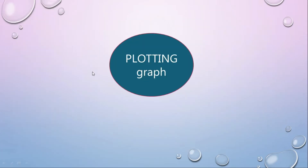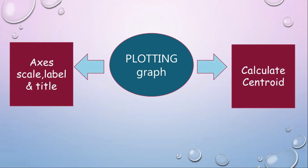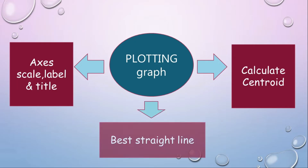We have three items for plotting a graph: choosing the scale, labeling and titling the axes, calculating the centroid, and drawing the best straight line.